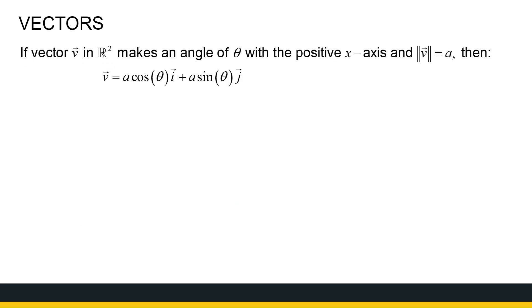So, let's take a look at what this helps us with. Here we've got a statement, if I've got a vector v in R2, if it makes an angle of theta with a positive x-axis, and the magnitude of v is equal to a, then I've got this whole statement here.